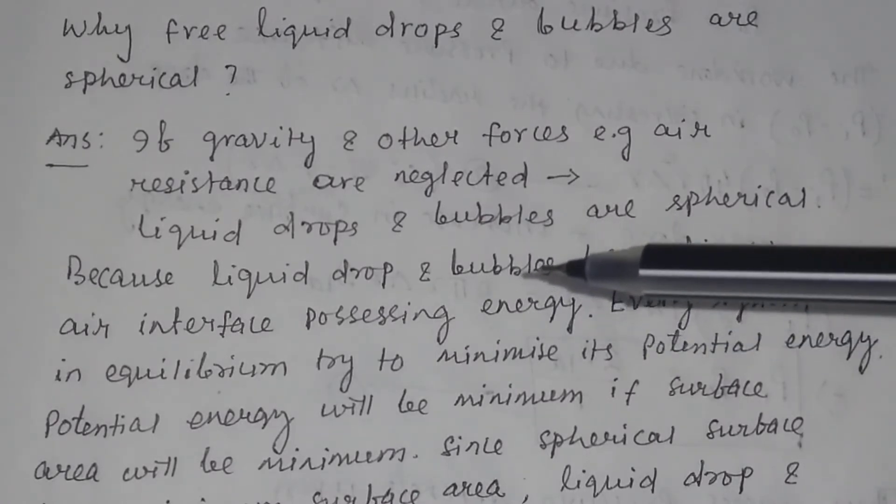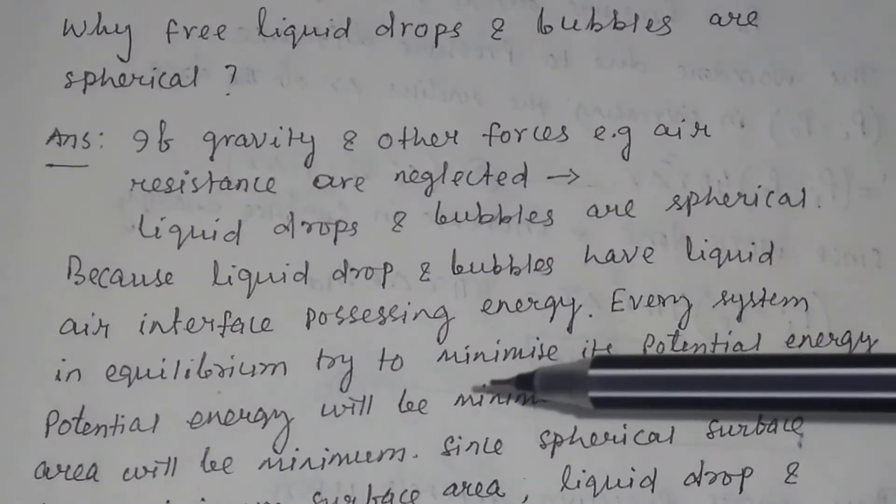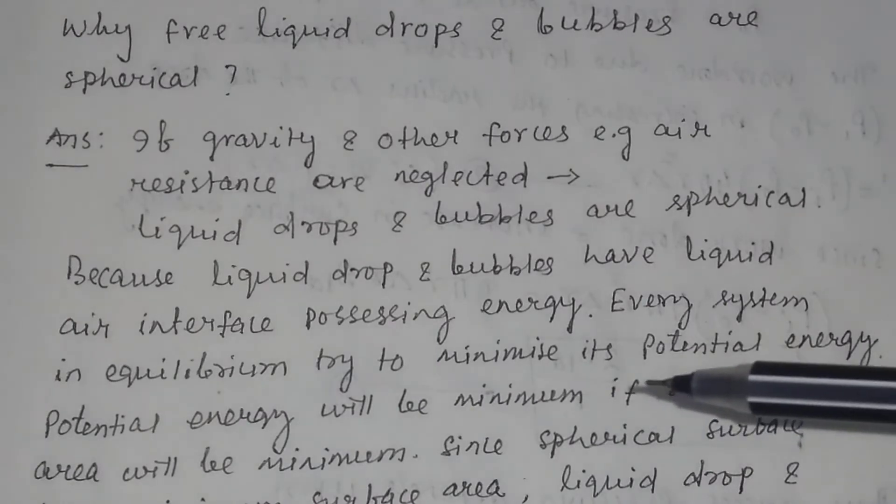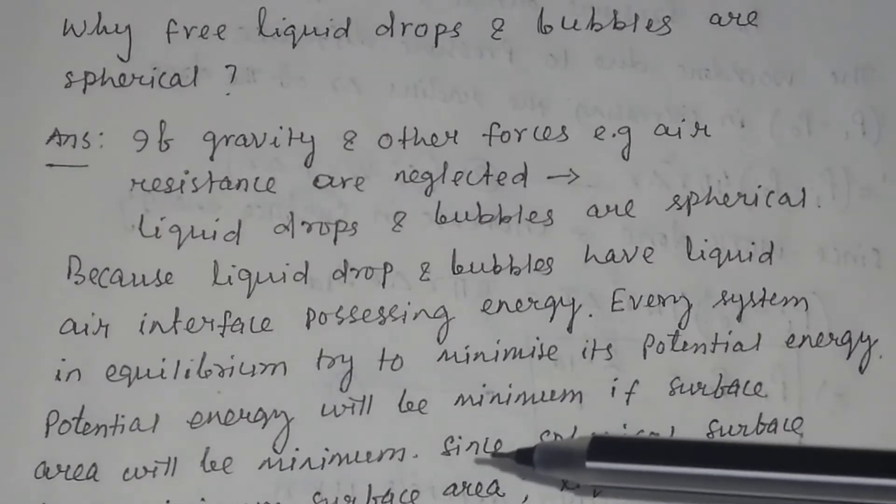This energy is due to surface tension, and every system in equilibrium tries to minimize its potential energy. Potential energy will be minimum if surface area is minimum.